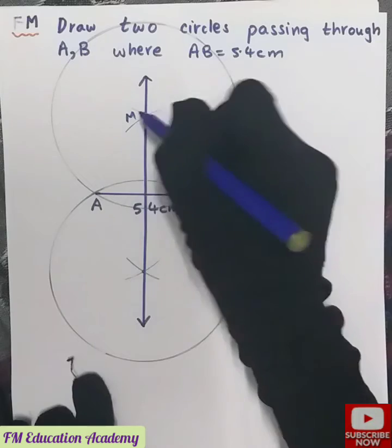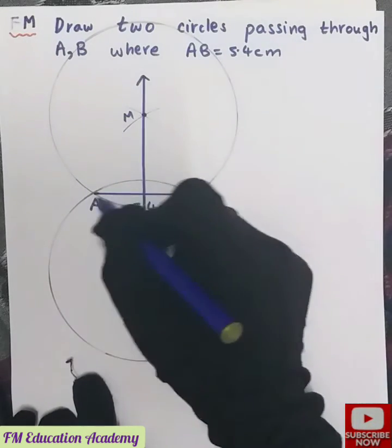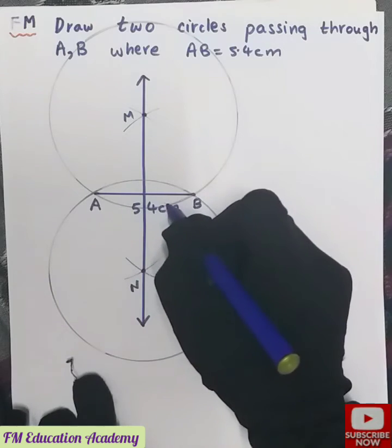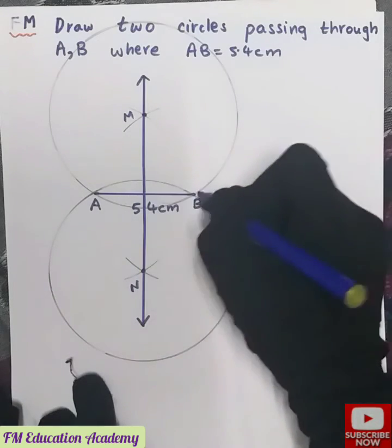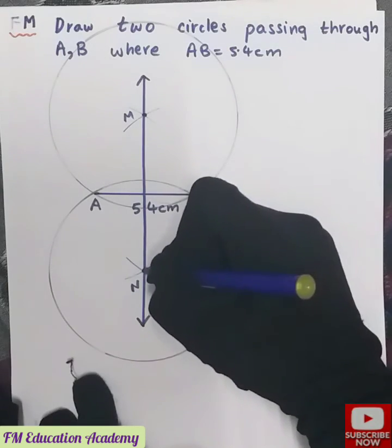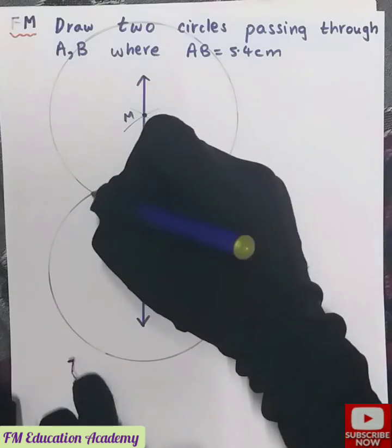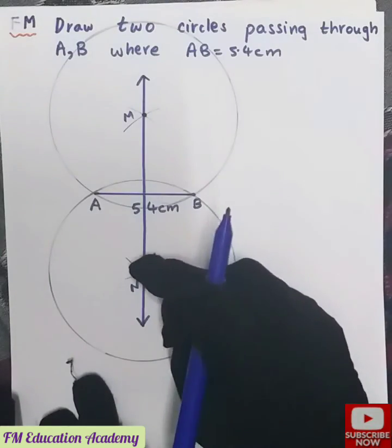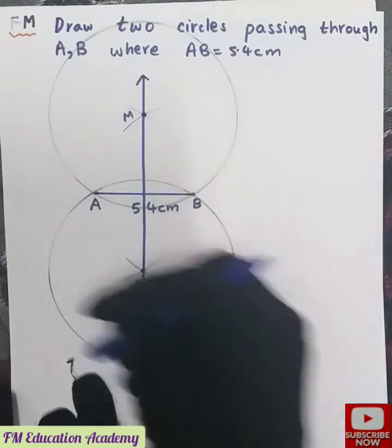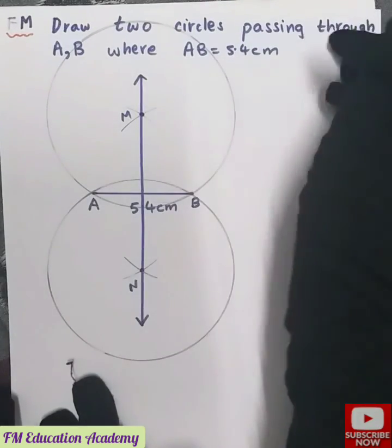Let this point be M, let this point be N. So what have we done here? First we have drawn a line segment AB equals to 5.4 centimeter, then we have drawn the perpendicular bisector of this AB, and then we have joined these two points M and N. We have put the compass on point M, taken the radius MA and drew a circle. Again put on N and draw a circle. Therefore two circles are formed from one line segment.